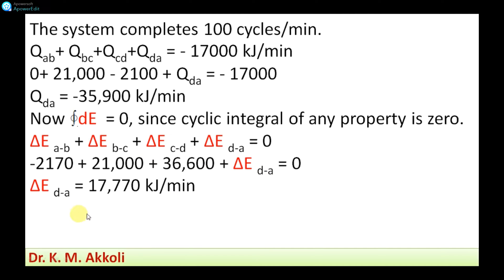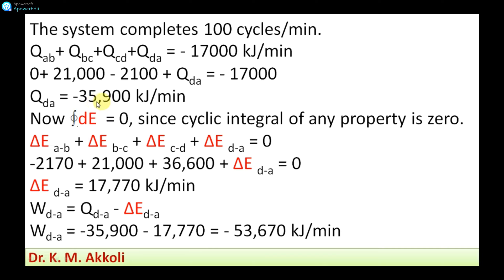After calculation, delta E_DA equals minus 170,770 kilojoules per minute. Now applying the first law of thermodynamics for process D-A: Q_DA equals delta E_DA plus W_DA. Therefore W_DA equals Q_DA minus delta E_DA. With Q_DA equal to minus 35,900 and delta E_DA equal to minus 170,770, after calculation we get W_DA equals minus 53,670 kilojoules per minute.